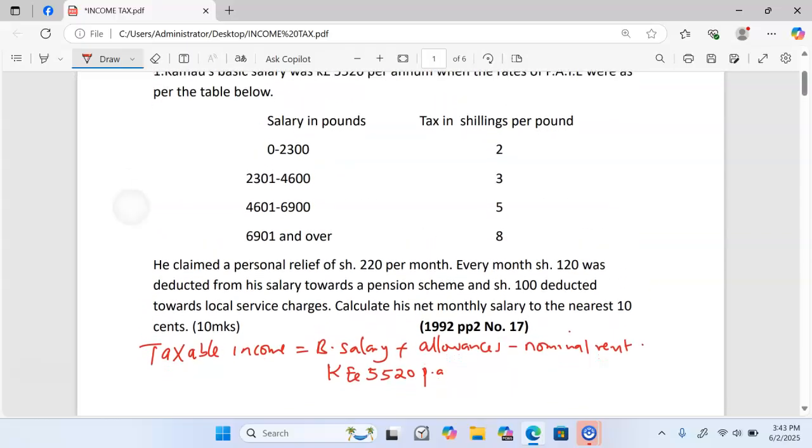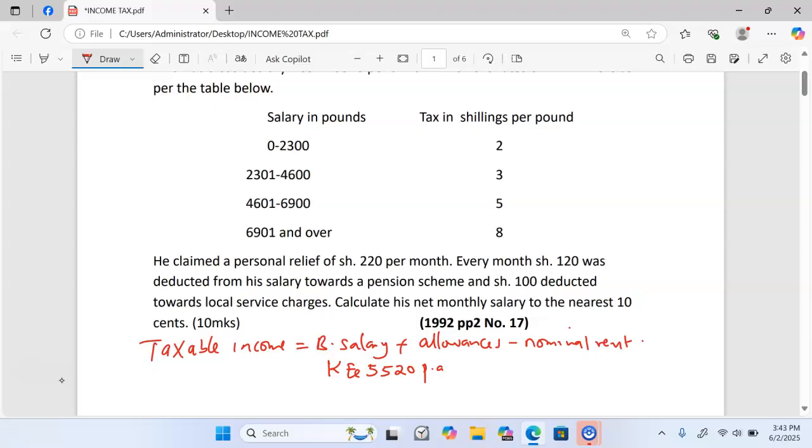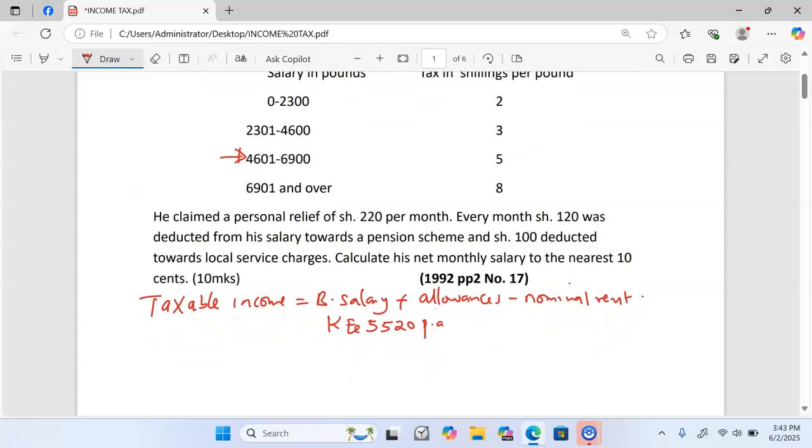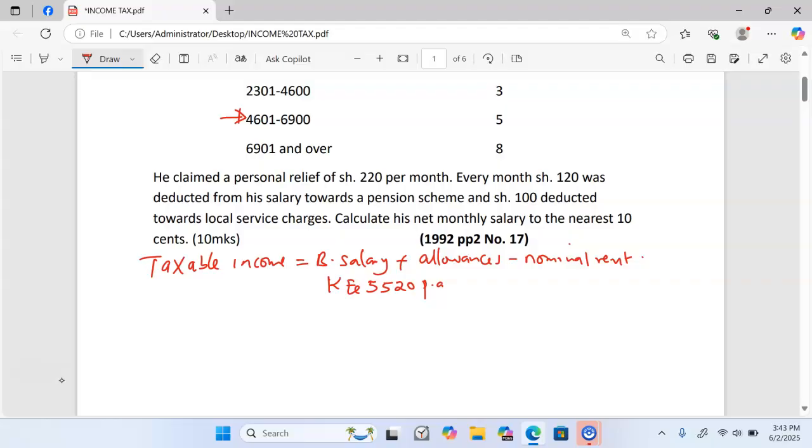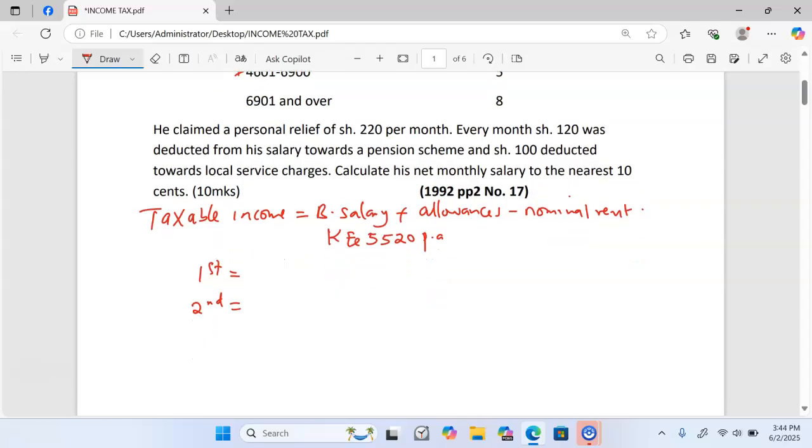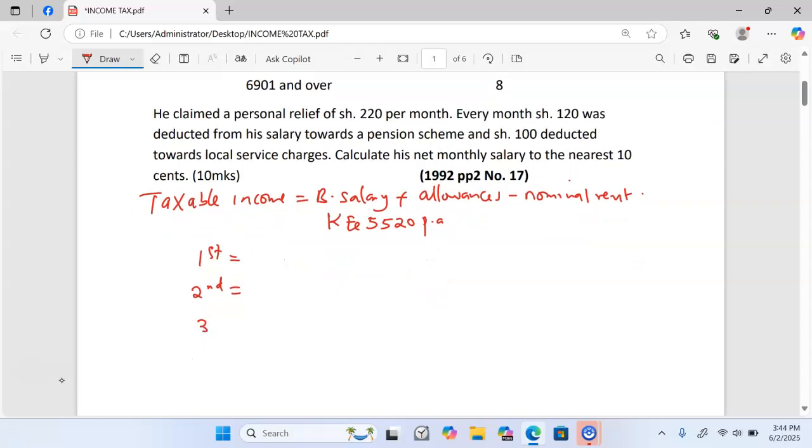Before we start taxing, we check where this amount lies. 5,520 lies in the third bracket, meaning we will tax this money three times. We have the first bracket, the second bracket, and the third bracket where our money lies, which we call the remaining amount.